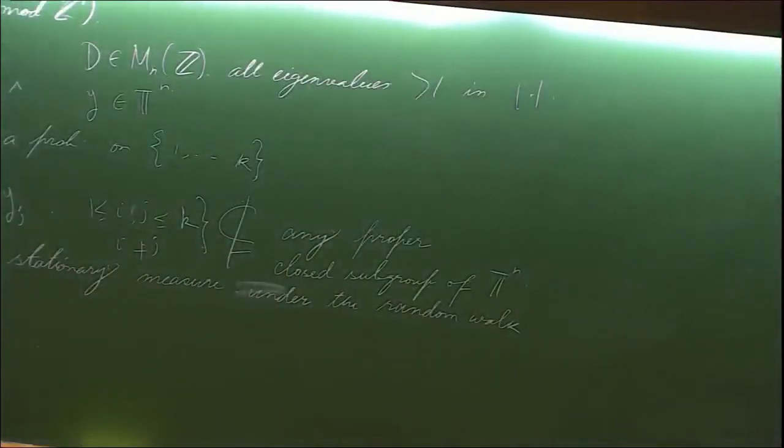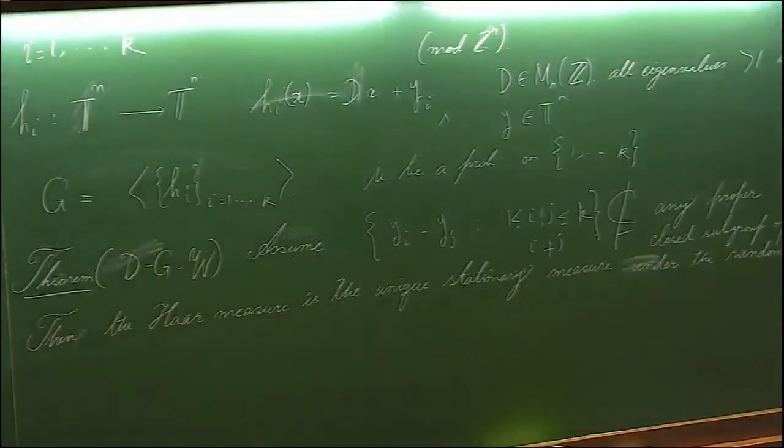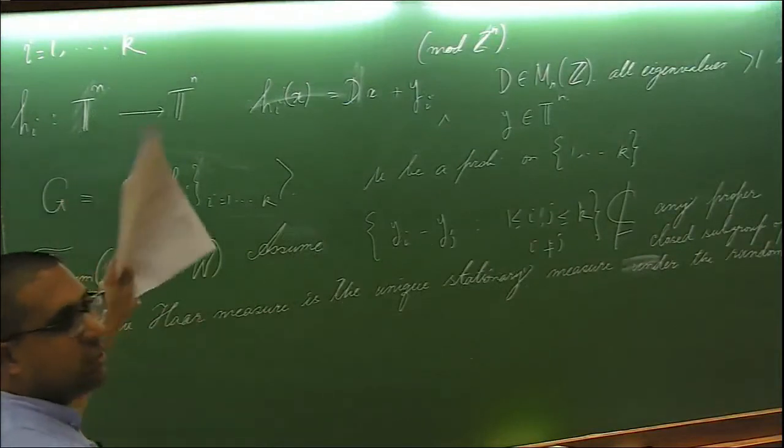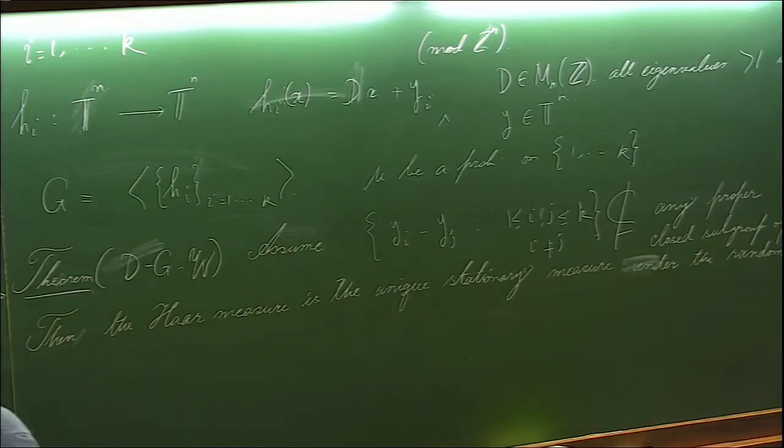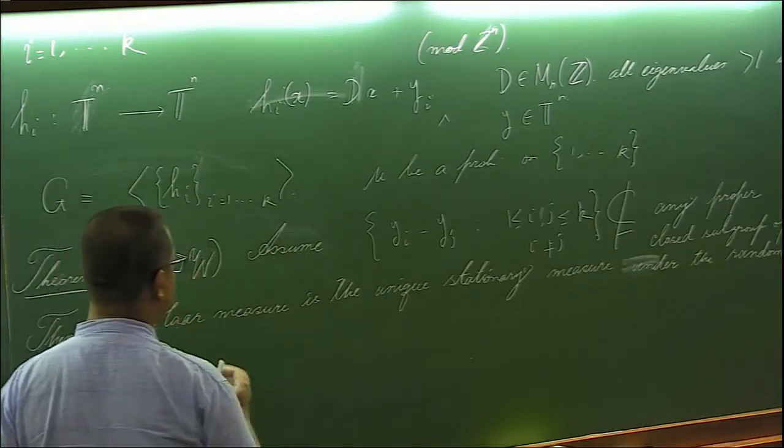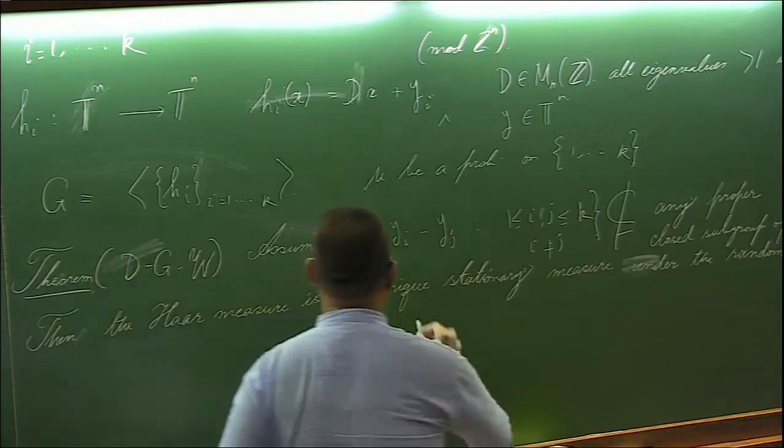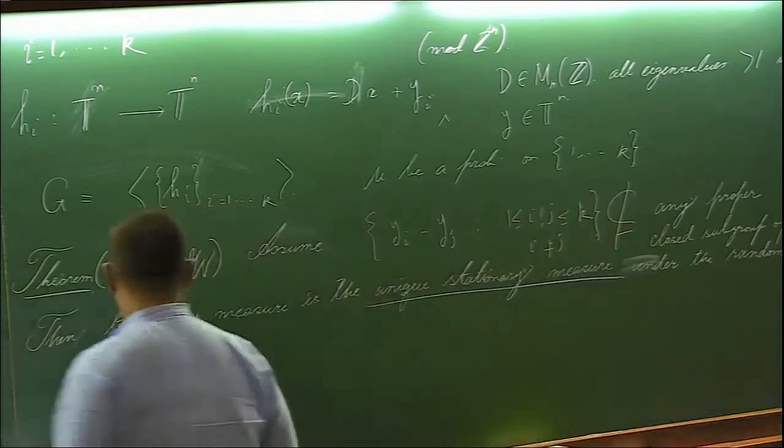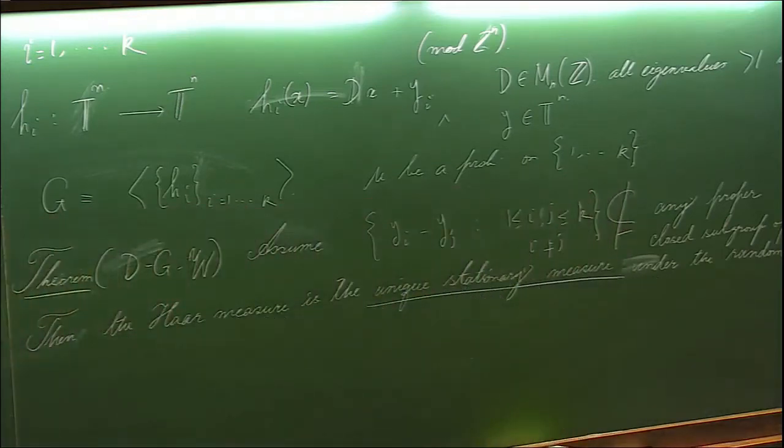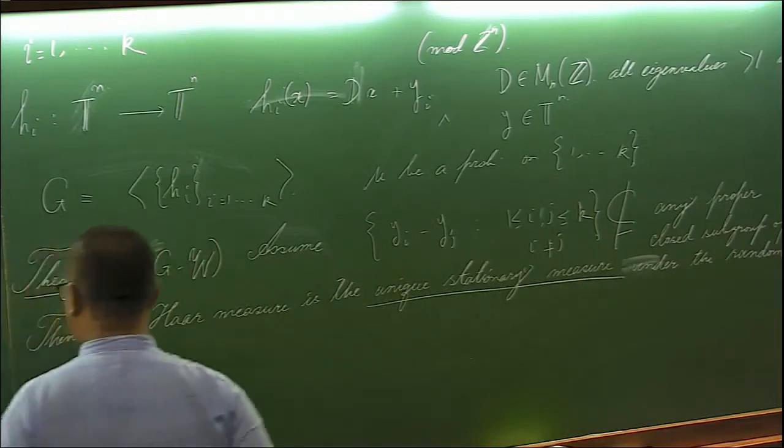As I remark, when n is 1, that is in dimension one, we have obtained somewhat even more stronger result. In one dimension, we have in some sense some complete classification. If time permits, I will discuss that but before that, I want to tell you what is the advantage of having the unique stationary measure.